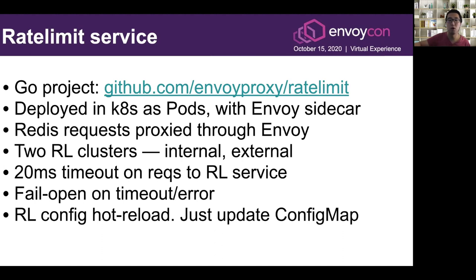The rate-limit service is a Go project. We deploy it in Kubernetes as pods with an Envoy sidecar, and this way we can proxy requests to Redis through Envoy, which gives us metrics for free as well as the ability to tweak Redis connection settings. We have two separate rate-limiting clusters — one for internal routes, another for external routes. If the rate-limit service is down or slowing down, there is a 20-millisecond default timeout; if exceeded, there is a fail-open, meaning requests will be allowed through by default. Just by updating the rate-limit service ConfigMap, it is hot-reloaded — so changing from, say, 5 requests per second to 10 just requires updating the config map and it reloads automatically.